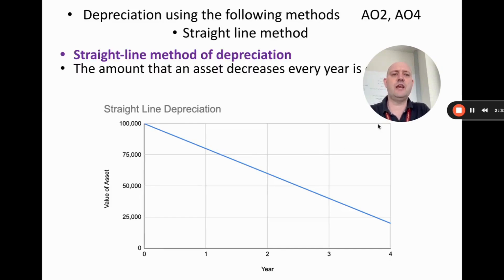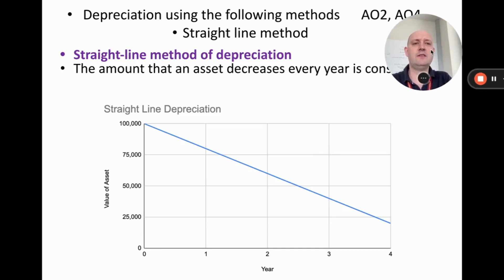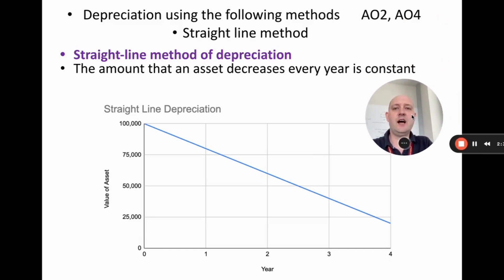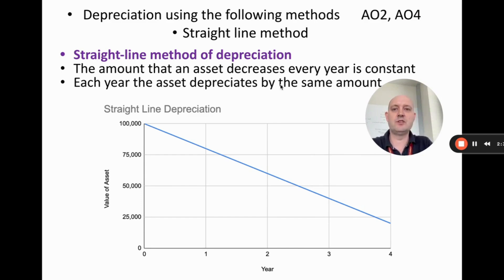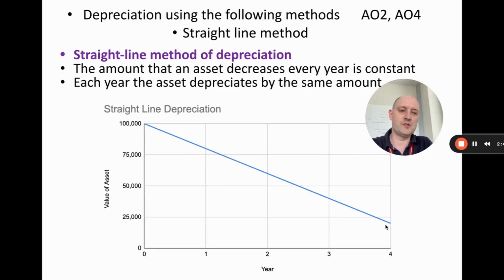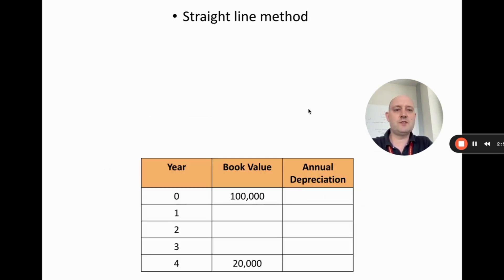Straight line depreciation is when the asset decreases every year by a constant amount — the asset depreciates by the same amount every year. You can see that the value of the asset goes down in a linear function. In terms of calculations, let's do some examples.